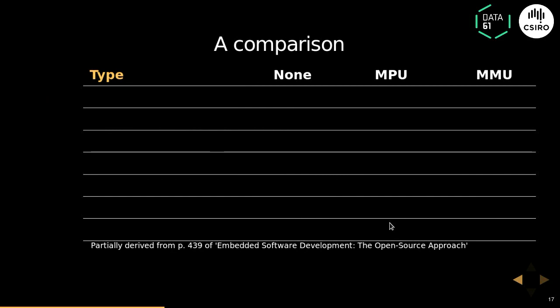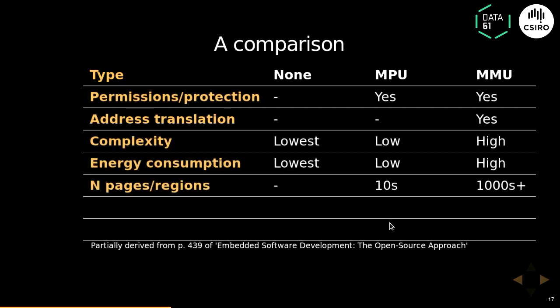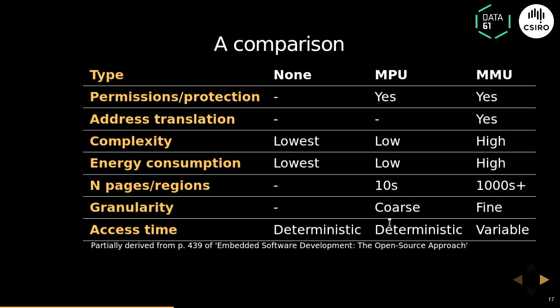If you look at the different properties of these hardware options, a memory protection unit is obviously a lot better than having no protection at all, but a memory management unit gives you a bit more. As far as complexity and energy usage go, a memory management unit is a much more complicated piece of hardware. And something interesting in the context of real-time operating systems is that memory access times for MPUs are more deterministic than with MMUs — you can put a finite upper bound on how long an MMU might take, but it's more difficult.